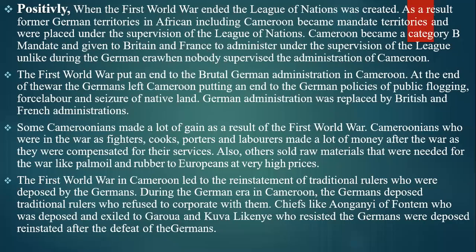On the positive side, when the First World War ended, the League of Nations was created. As a result, former German territories in Africa, including Cameroon, became Mandate Territories placed under the supervision of the League of Nations. Cameroon became a Category B Mandate and was given to Britain and France to administer under League of Nations supervision — unlike during the German era when nobody supervised the administration of Cameroon. The First World War also put an end to the brutal German administration, ending policies of public flogging, forced labor, and seizure of native land, with German administration replaced by British and French administration.